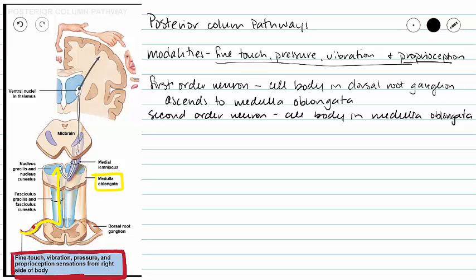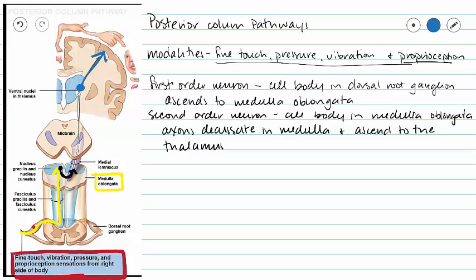So our second order neuron cell body is in our medulla oblongata. Then that second order neuron is going to decussate, meaning that its axon travels to the other side of the spinal cord, and then our second order neuron is going to ascend to the thalamus. In the thalamus our second order neuron synapses to a third order neuron which then carries that information to our somatosensory cortex.